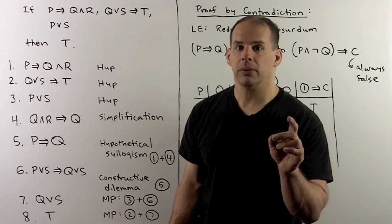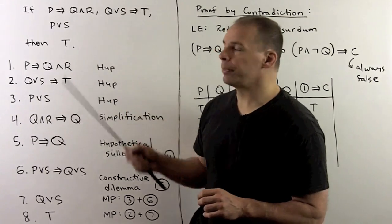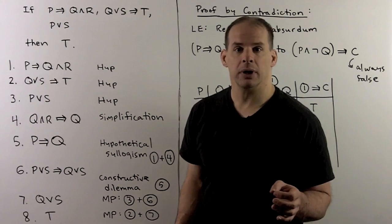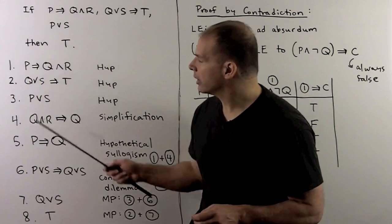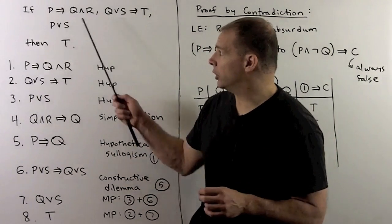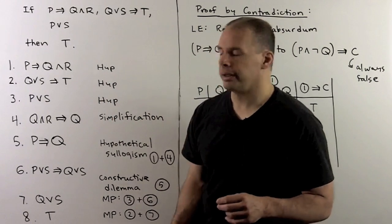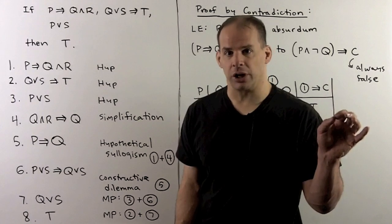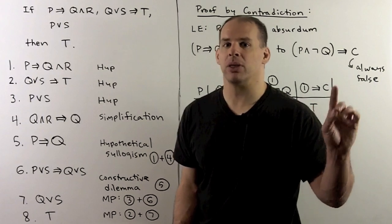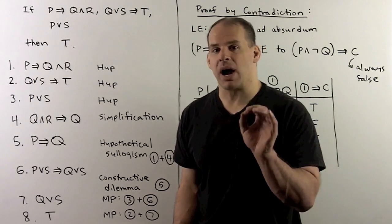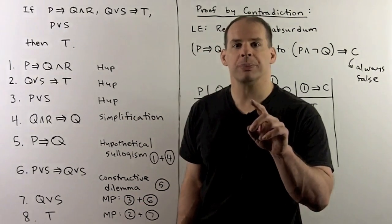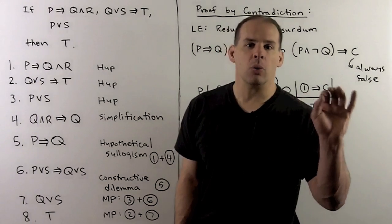For our next example, let's consider the theorem: if p implies q and r, q or s implies t, and p or s, then we have conclusion t. We begin by listing our hypotheses — those will be statements one through three. To proceed, we need to work with q and r, q or s, and p or s. We have to go through the rules for logical equivalence, logical implication, and the rules of inference. With enough practice, we'll get better at knowing what rule to use.